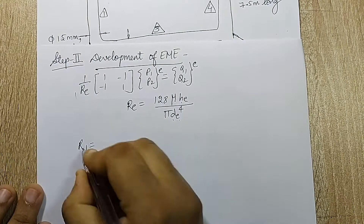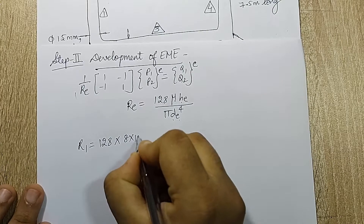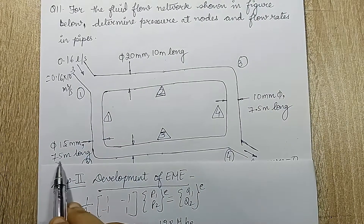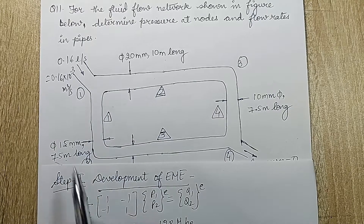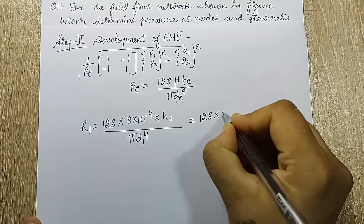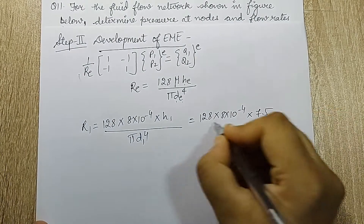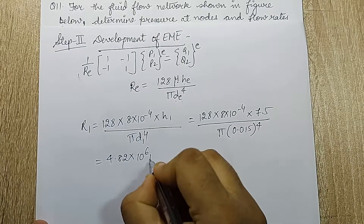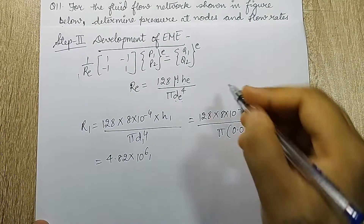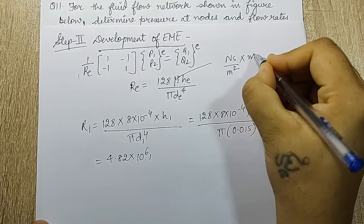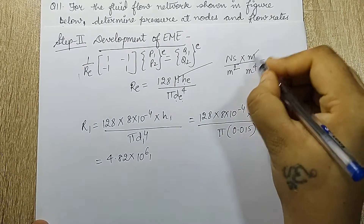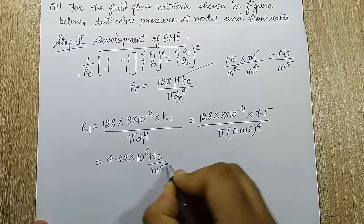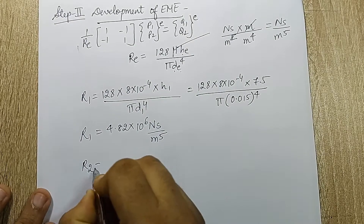To calculate R1: R1 = 128 × (8×10⁻⁴) × 7.5 / (π × (0.015)⁴). Here h1 = 7.5 m and diameter = 15 mm = 0.015 m. Solving this gives R1 = 4.82×10⁶. The units are: mu in N·s/m², h in m, d⁴ in m⁴, so the unit of R is N·s/m⁵.